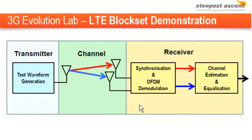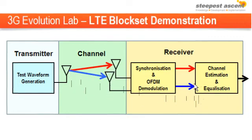We will now visualise some signals within the receiver to illustrate the effect of channel equalisation. The signal received on the first antenna will be blue and the signal received on the second antenna will be red. The signal after equalisation will be shown as black.